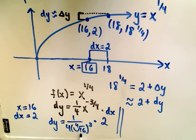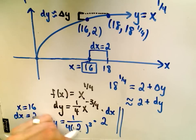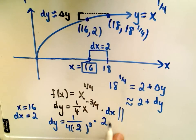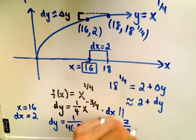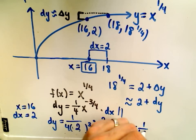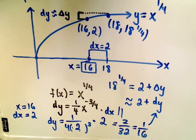Now all we have to do is compute this value. The 4th root of 16 is 2. So I have 2 cubed, which is 8 times 4, which is 32 times 2. That'll give us 2 over 32, or 1 over 16, which is our dy value.